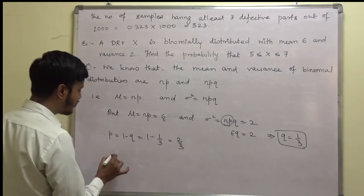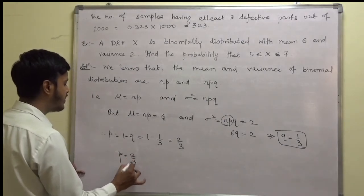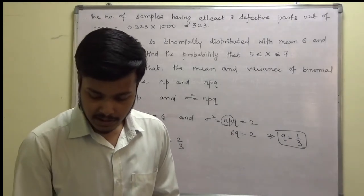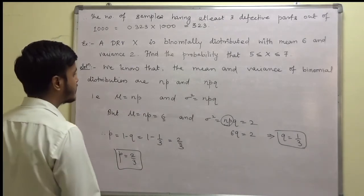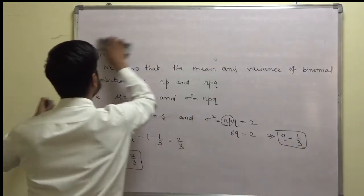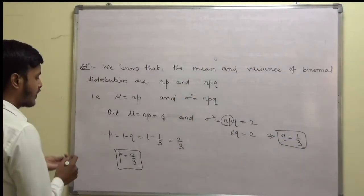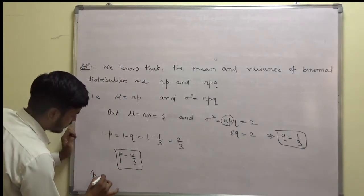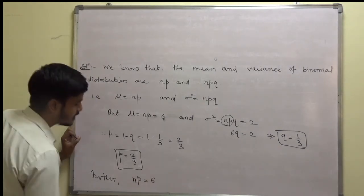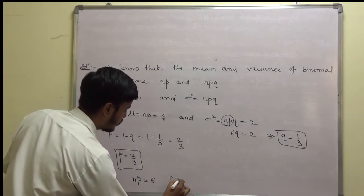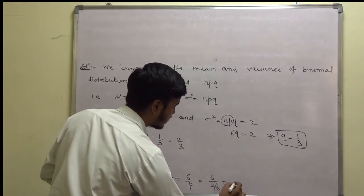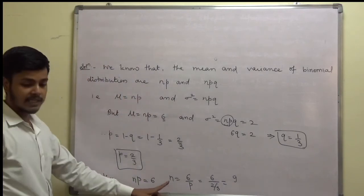Further, since np equals 6, n is equal to 6 by p, which is 6 divided by 2 by 3, giving 18 by 2, that is 9. So I am getting n as 9. Now I have n, p, and q, so I can easily find out the required probability.